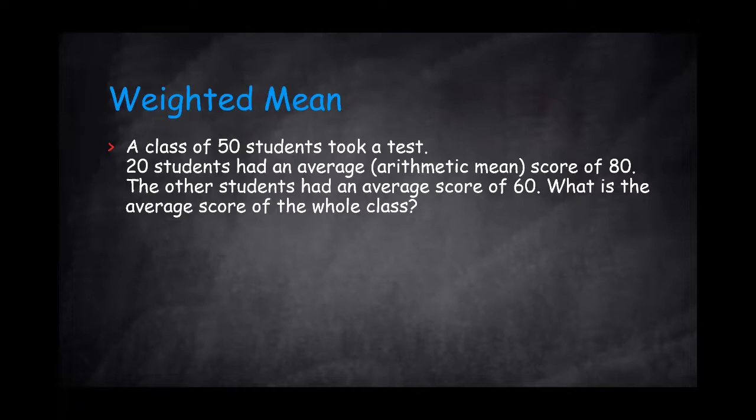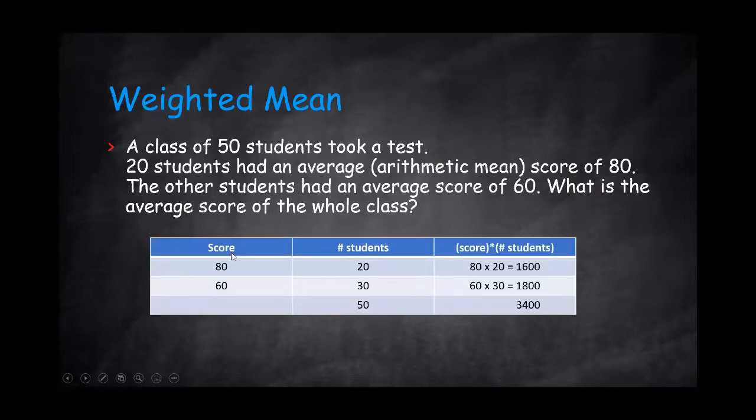If a class of 50 students took a test, and let's say 20 students had an average of 80, and the other students had an average of 60, what is the average score of the whole class? So basically what we are learning is that a score of 80, 20 students got that, and a score of 60, 30 students got that.